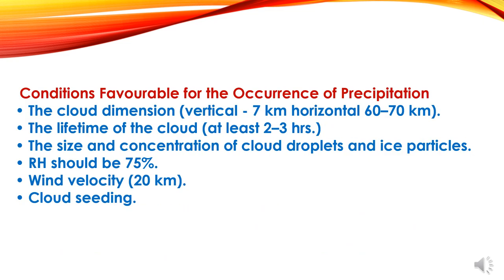Conditions favorable for the occurrence of precipitation: first, cloud dimension — vertical 7 km and horizontal 60 to 70 km. The lifetime of the cloud should be at least 2 to 3 hours for good rains. The size and concentration of cloud droplets and ice particles. Relative humidity should be 75% and wind velocity should be nearly 20 km per hour. And cloud seeding should be present. These conditions will favor the occurrence of rain and precipitation.